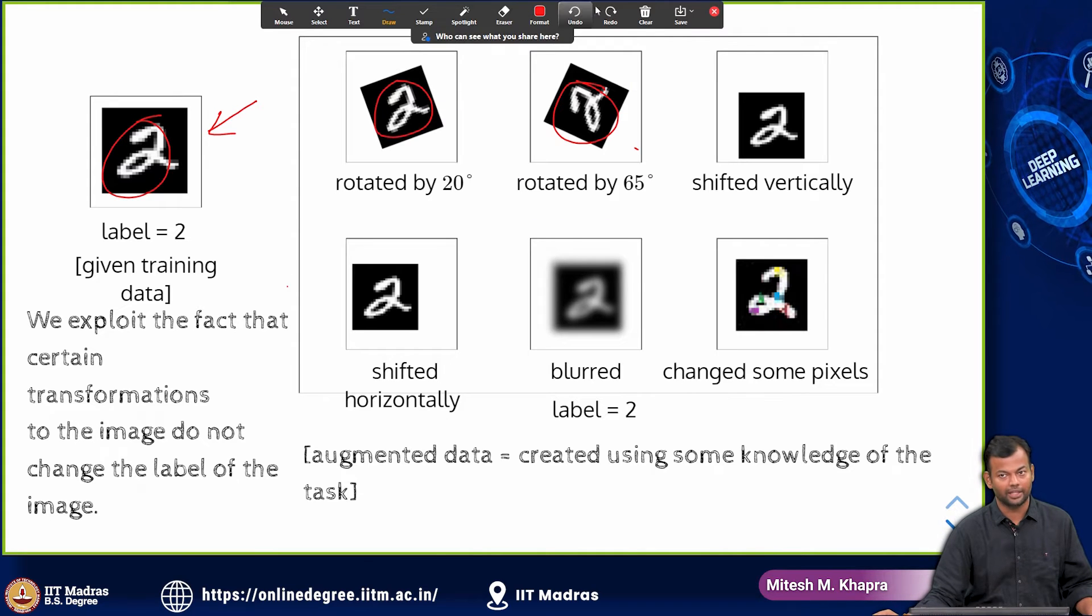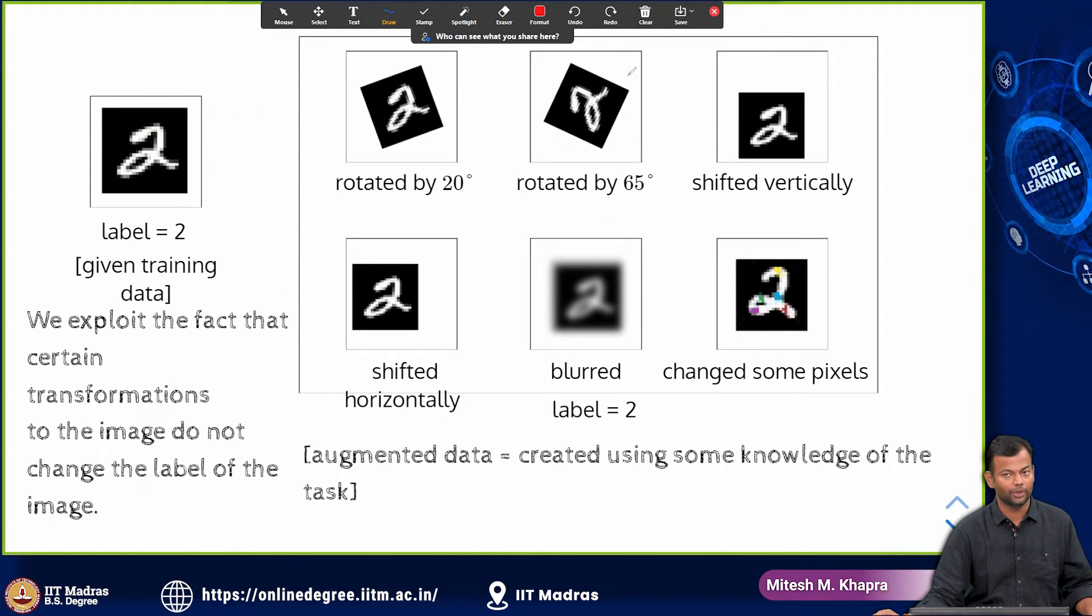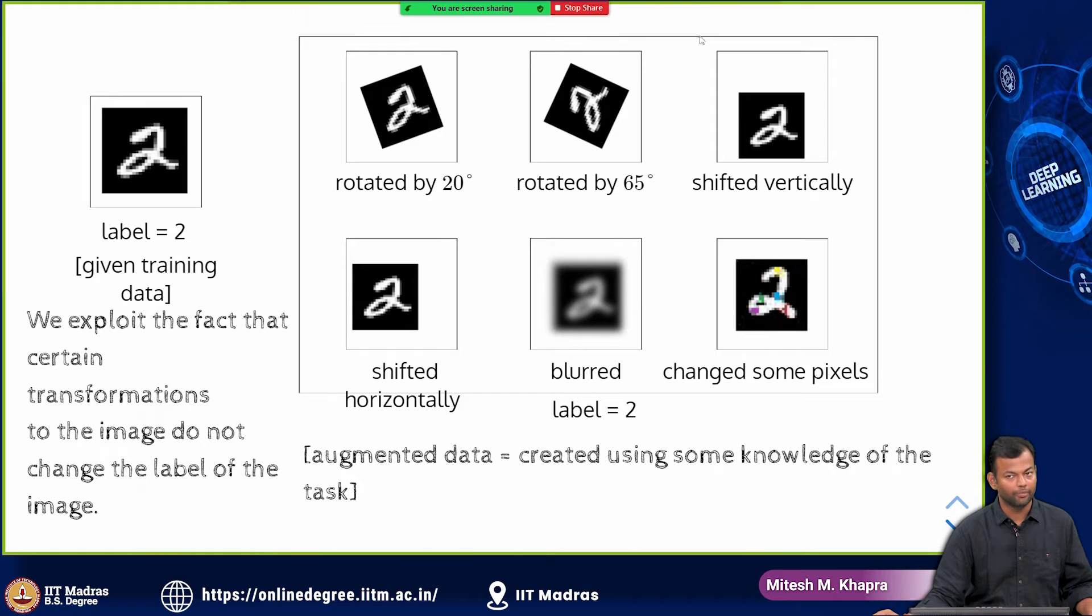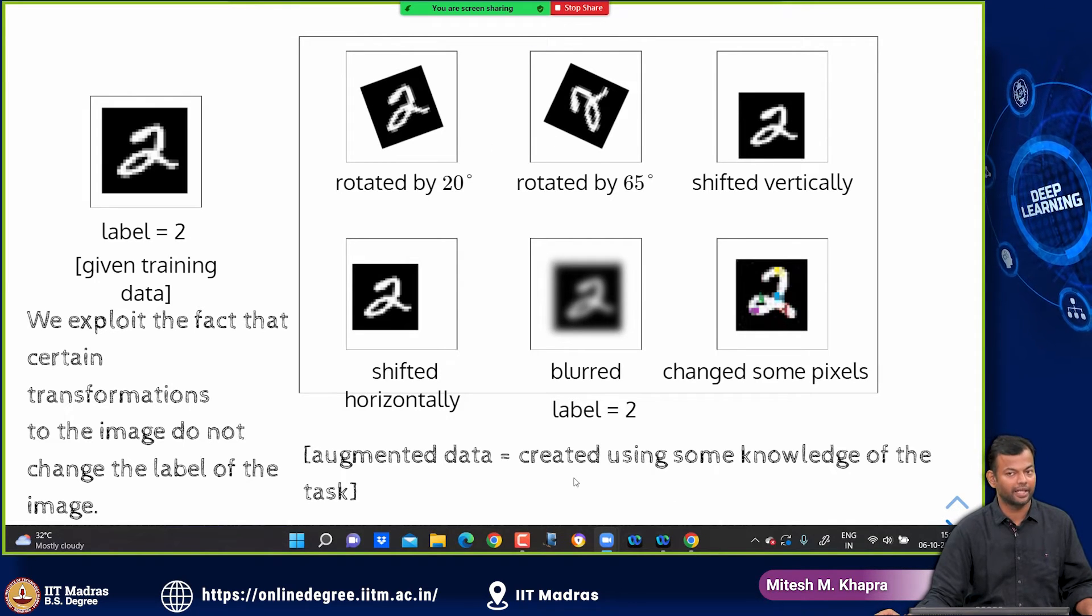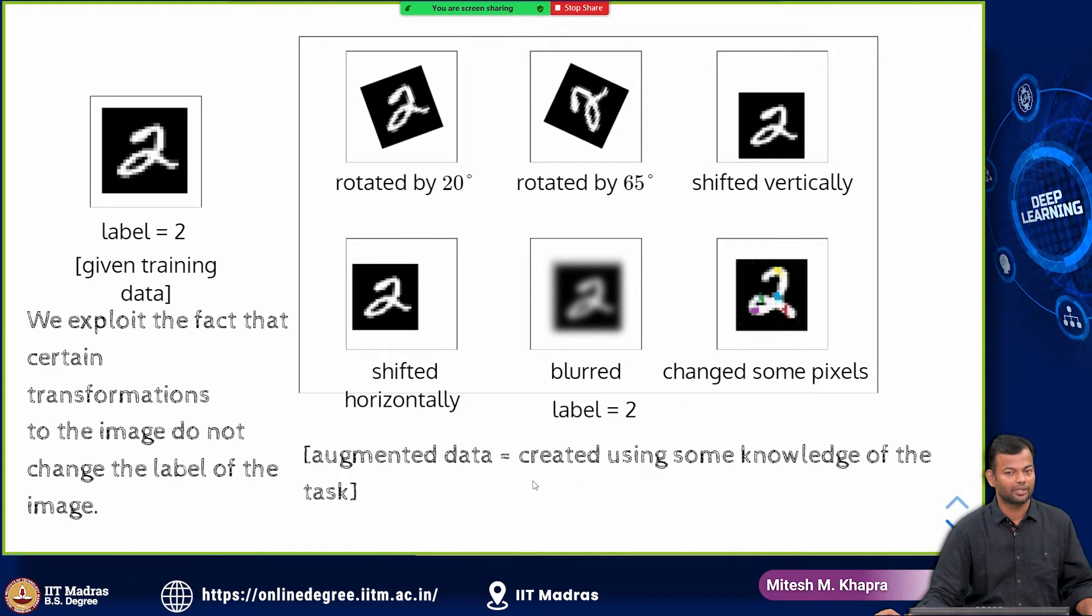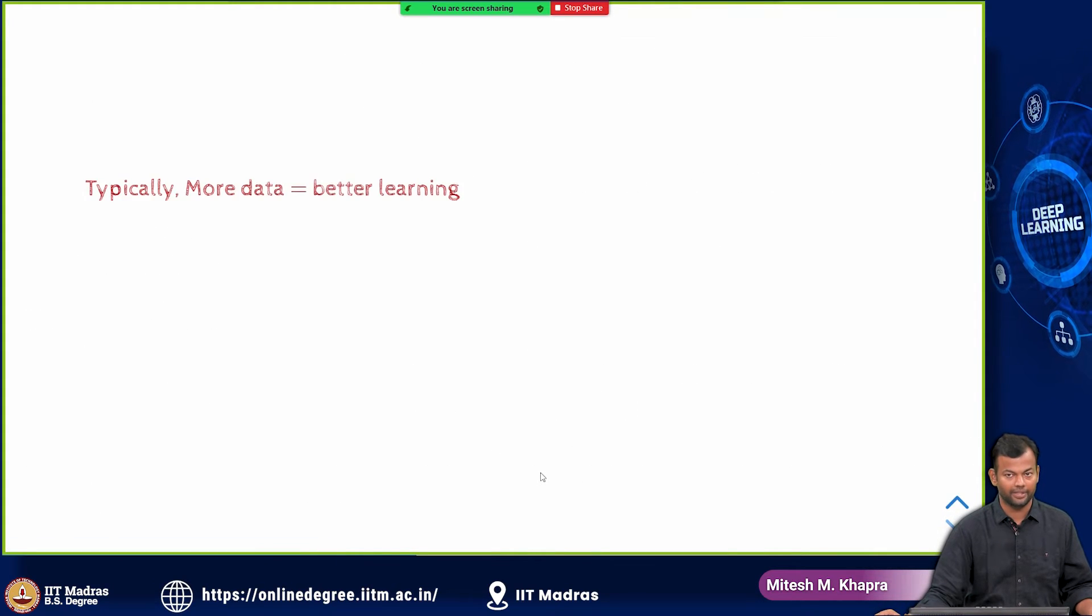That is all there is to this technique, there is nothing more to be said here. The only intuition here is that you have more training data, you have more variants of the same image and all of that you have to be able to classify as 2. So now, this chance of just memorizing and not understanding reduces a bit.